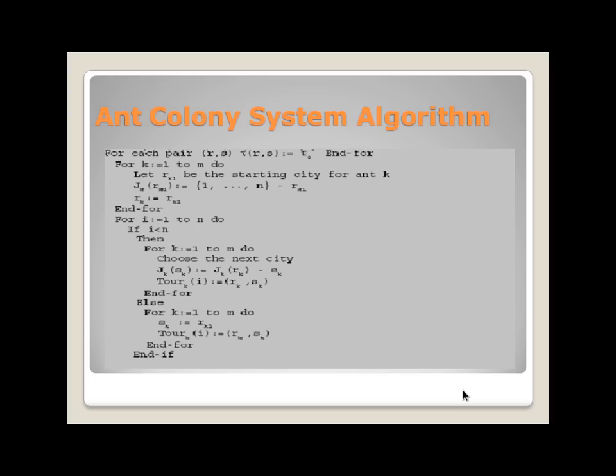In this for loop it takes rk1 as the starting city of ant k. jkrk1 is the set of yet to be visited cities for ant k in city rk1.